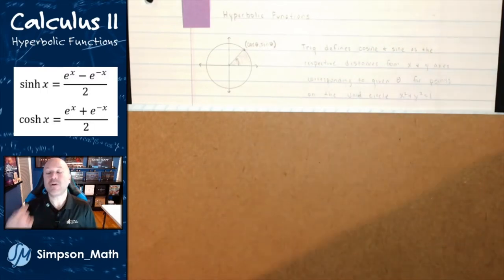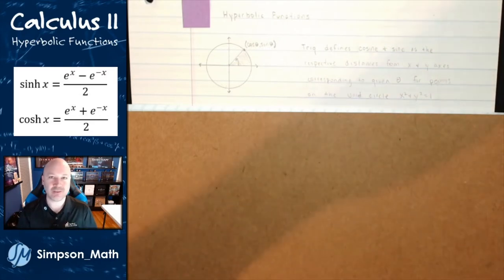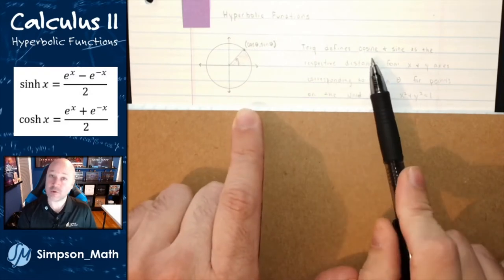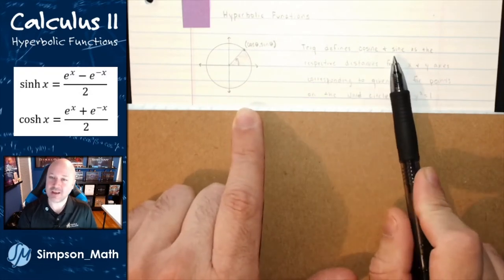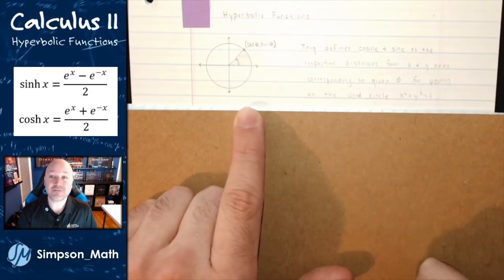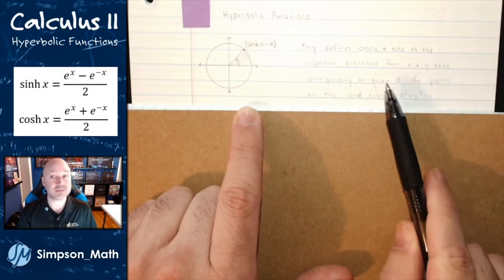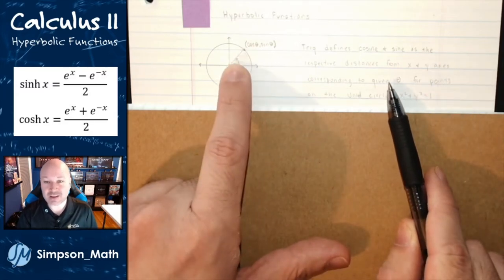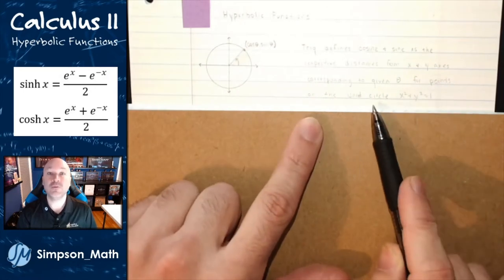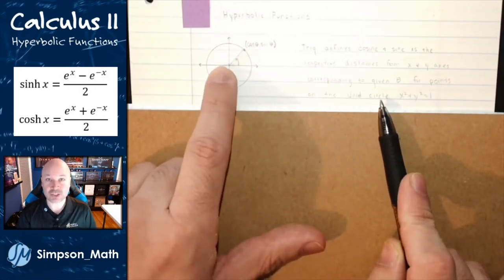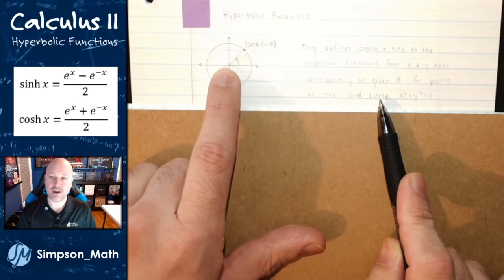Before I get started on talking about the hyperbolic functions, let me quickly remind you about the trig functions. Trig defines cosine and sine as the respective distances from the x and y axes corresponding to some given angle theta for points on a unit circle — that is, a circle centered at the origin with a radius of one.